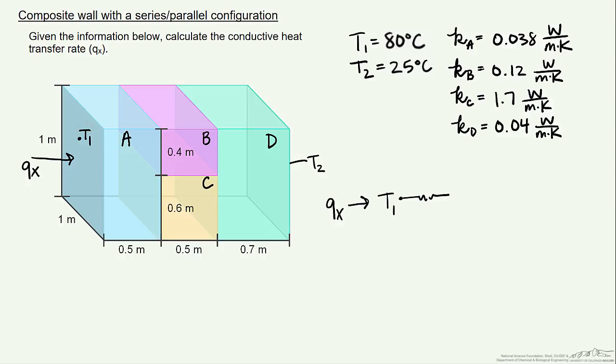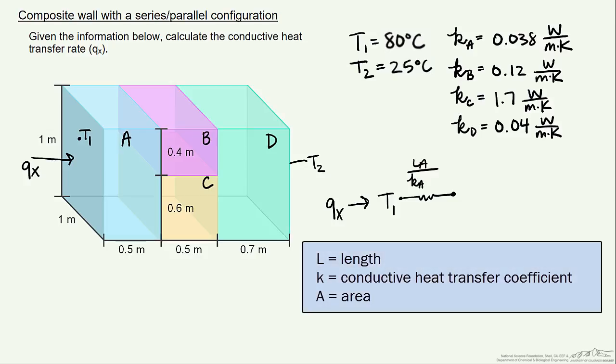The first resistance that it goes through is the conductive resistance through section A. We have L sub A divided by K sub A, and then our area of A.